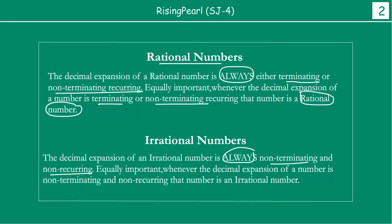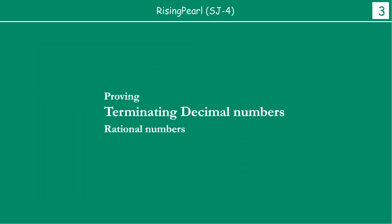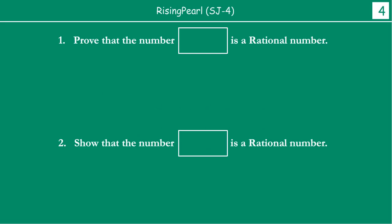Now, dosto, we are going to take some examples. The first thing we will do is take a look at terminating decimal numbers — proving terminating decimal numbers as rational numbers. As always, dosto, we are going to take some examples and see.